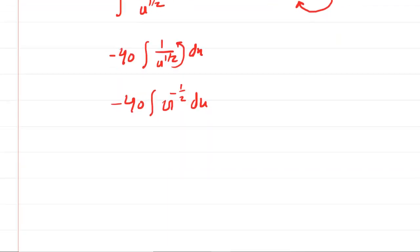Okay, finally we can integrate. So we add 1 to the exponent, that gives us u to the positive half. Then we multiply by the reciprocal. The reciprocal of 1 over 2 is just 2 over 1. Don't forget about the negative 40 right there. So when you multiply that, you're going to get negative 80 times the square root of u.